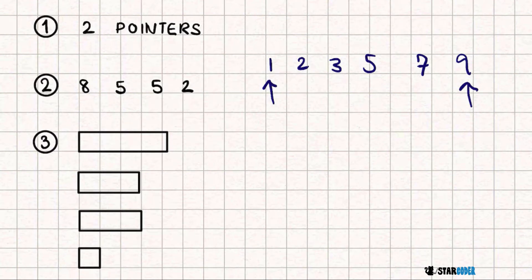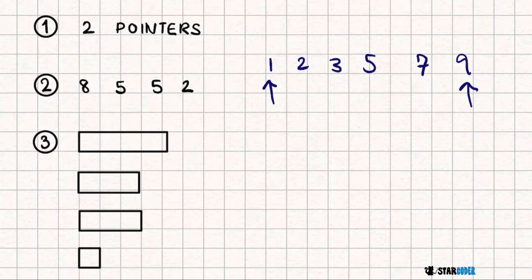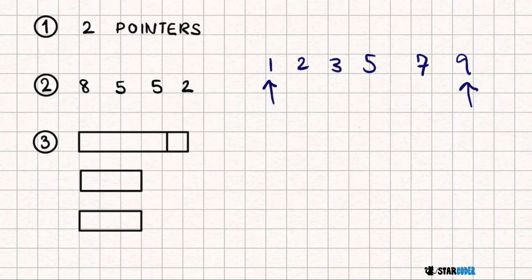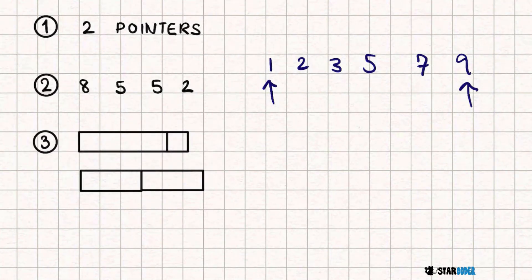Since we're adding the two values together, in order to minimize the total amount of time, we definitely don't want the greatest value paired with another big value. So for the greatest value, we give it the smallest possible one, and for the next greatest, the next smallest. This means we just have two pointers, one starting on each side, pairing each other up.